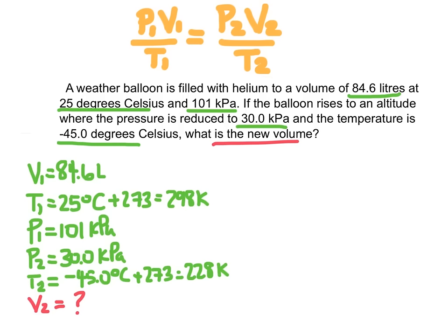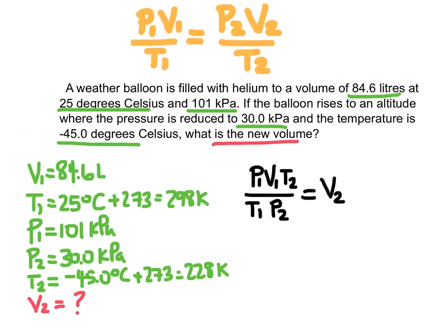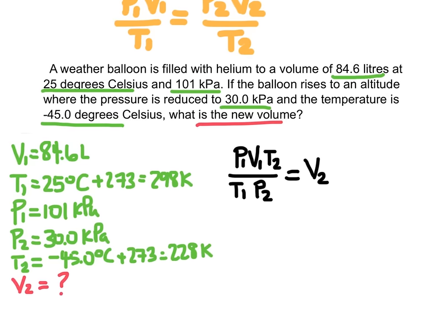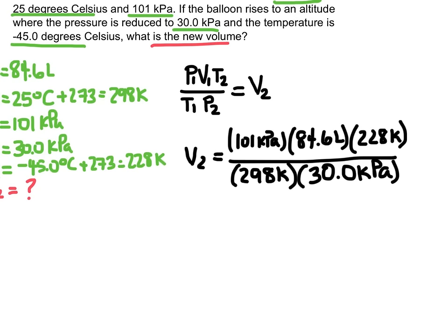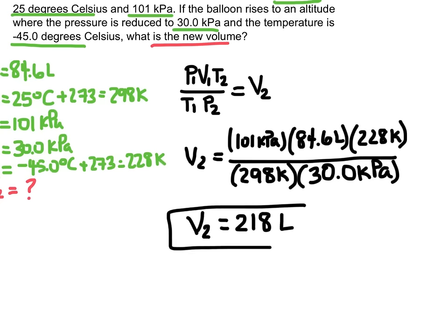Let's rearrange the combined gas law equation. Moving T2 to the numerator on one side and P2 to the denominator on the other gives V2 = (P1 × V1 × T2) / (T1 × P2). Plugging in all known information, we get a new volume equal to 218 liters.